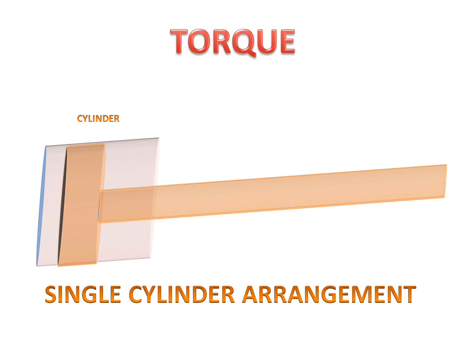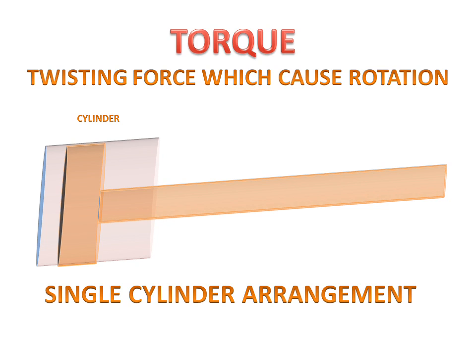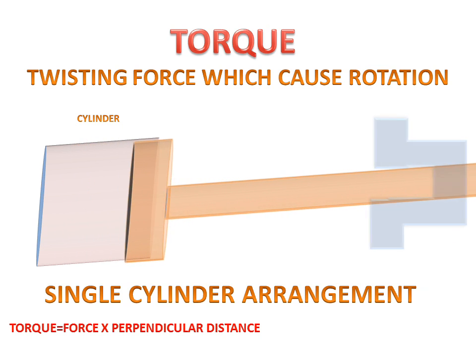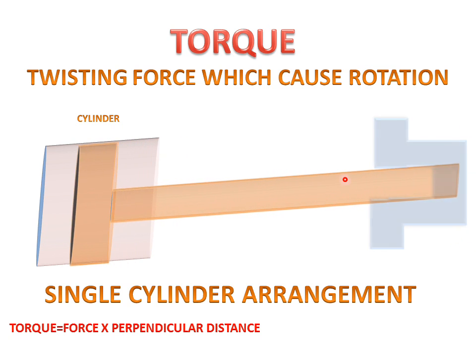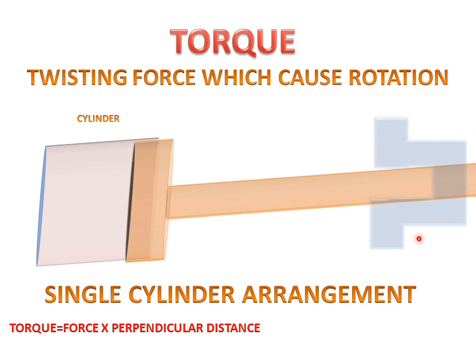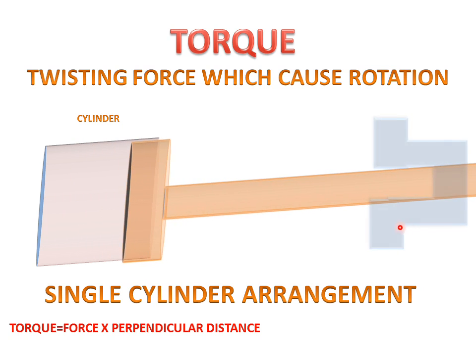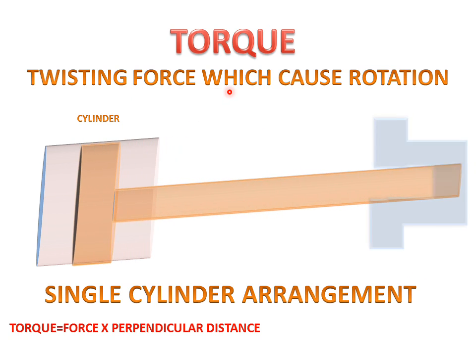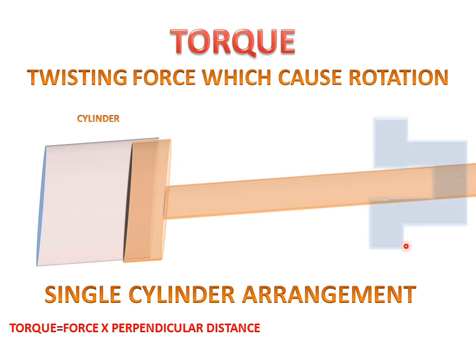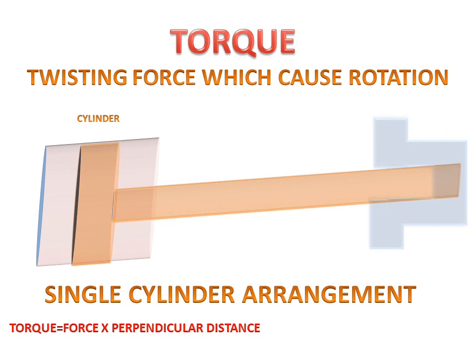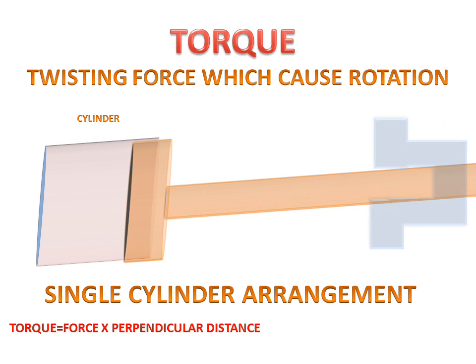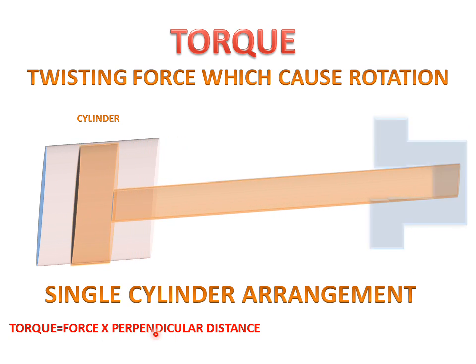Now let's discuss Torque. What is Torque? Torque is a twisting force which causes rotation. We take an example of the piston cylinder and a crankshaft — when the piston cylinder moves, it will rotate the crankshaft of the engine. This crankshaft rotates, and this twisting force which produces rotation is called Torque. Torque is force multiplied by perpendicular distance.